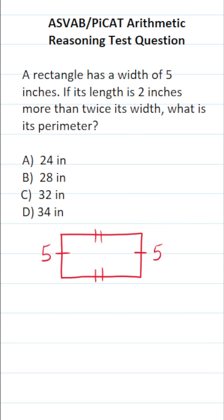As for its length, it says this: Its length is 2 inches more than twice its width. So twice its width is 2 times 5 plus 2 inches. 2 times 5 is 10 plus 2 is 12. So in other words, this rectangle has a length of 12 inches.